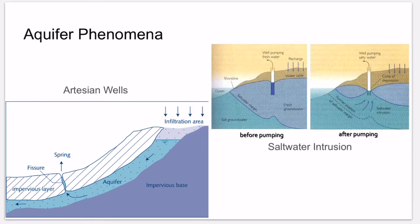Salt water usually stays below fresh water due to its higher density, but through suction from pumping in coastal areas, this can bring up salt water from below the freshwater aquifer. This salt water intrusion is a problem because it can cause contamination of drinking and irrigation water.